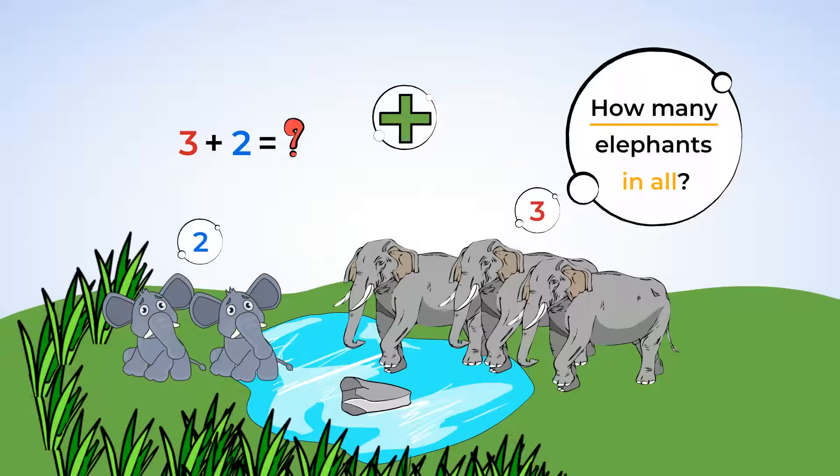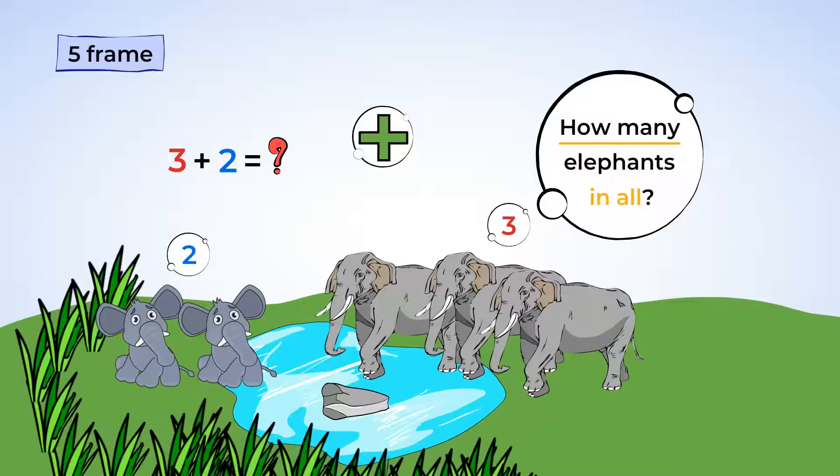It's addition time. We can use our five frame for this. Here is our five frame. Let's put three circles for the three adult elephants and two circles for the two baby elephants. How many circles do you see? Well, the five frame is full. So, there are five circles here.